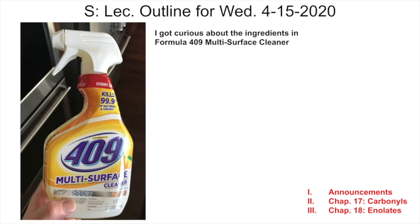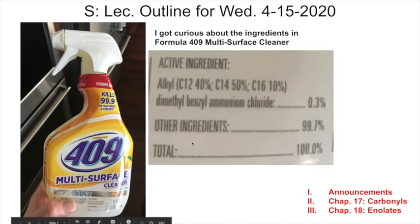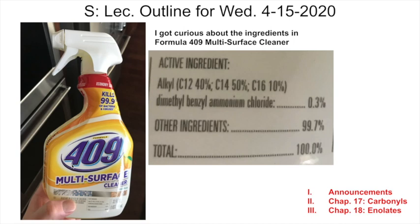Happy hump day! I was cleaning the counters and saw my Formula 409 bottle has a label saying it kills 99.9% of bacteria and viruses. I looked at the active ingredients: an alkyl C12-C16 dimethylbenzyl ammonium chloride at 0.3%. The other ingredients are 99.7%. Let's explore what those are. We're also covering announcements and Chapter 17, maybe getting to Chapter 18 enolates.